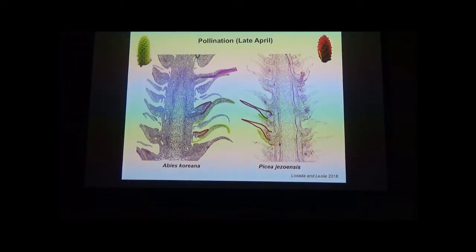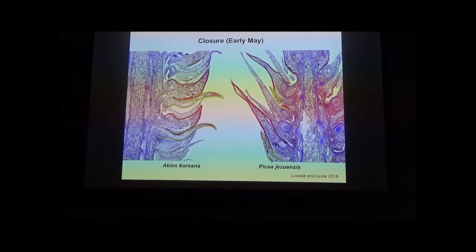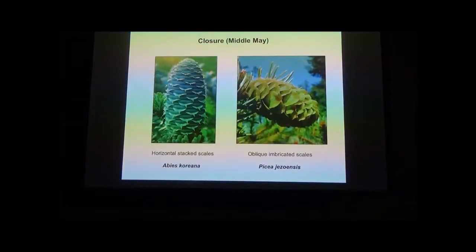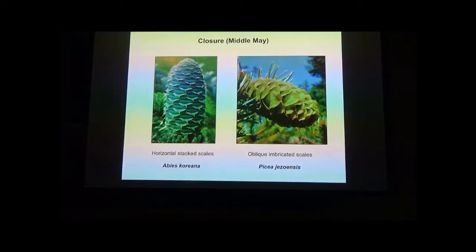As we go further in developmental time, the open cones collect pollen, and then need to close to prevent fungi and insects from reaching the seeds. They close in slightly different ways. In Picea, ovuliferous scales continue growing with cell proliferation at the base that flips them up and seals the cone. In Abies, the ovuliferous scales finally grow, becoming thick and fat to seal the cone. At this point, the ovuliferous scale in both taxa assumes all the functional roles, with bract tips remaining visible as remnants.